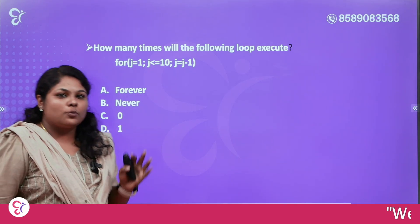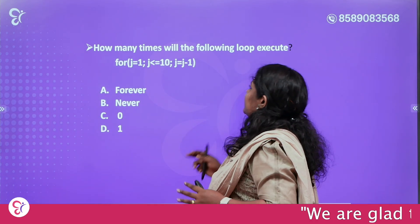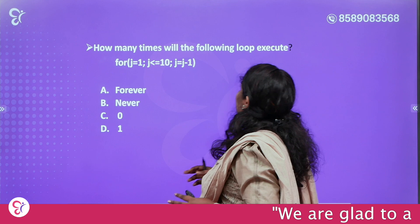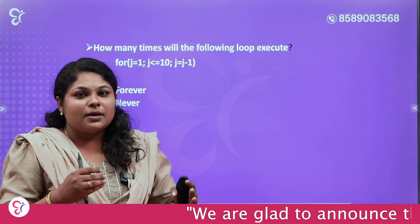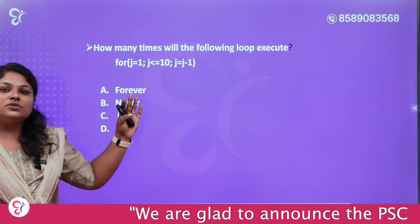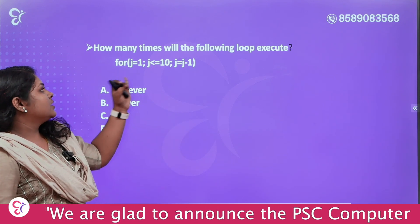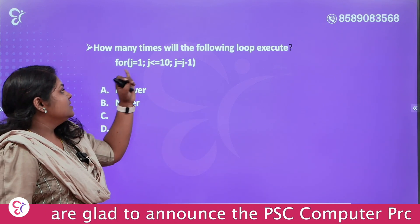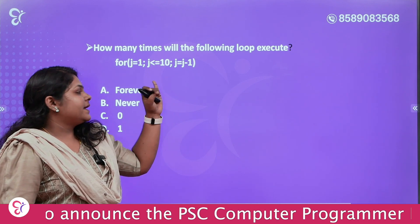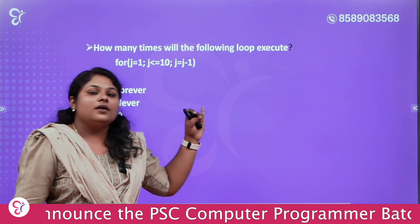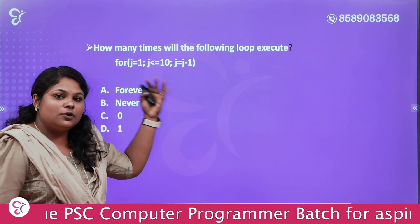The first question will be output prediction. How many times will the following loop execute? j is equal to 1, j is equal to 10, j is equal to j minus 1. How many times will the loop work?